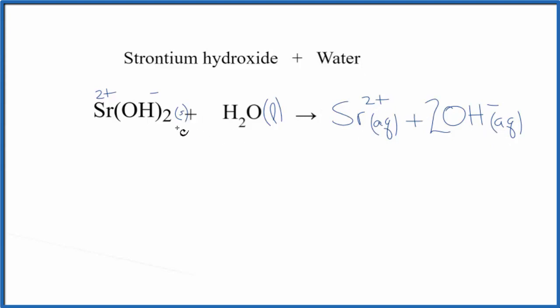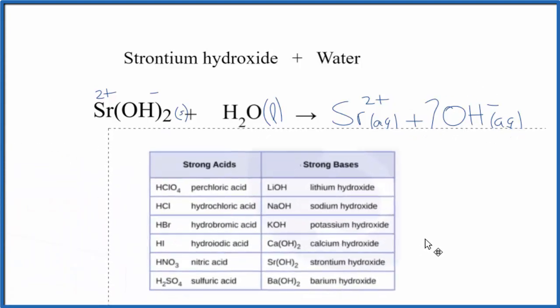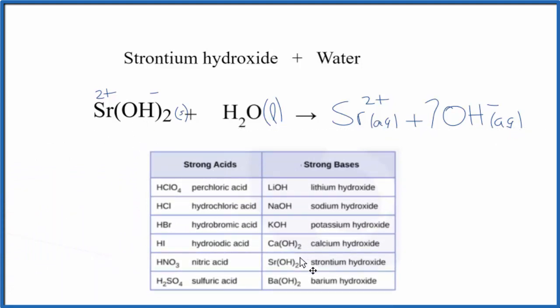So this would be the equation for strontium hydroxide dissolving in water. The strontium hydroxide here is producing these hydroxide ions, that's what makes it a base. We have a list of strong bases. Strontium hydroxide is considered to be a strong base, which means it's going to dissociate completely when you put it in water.